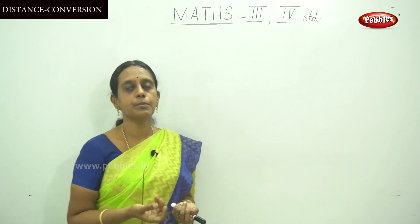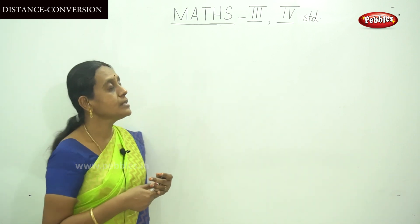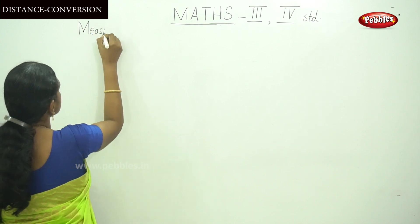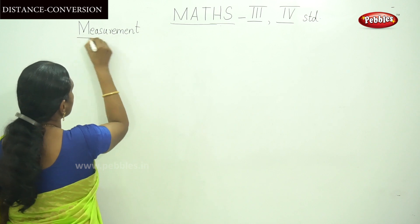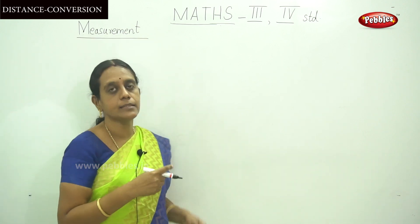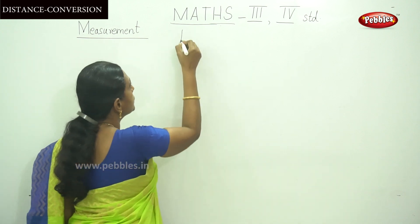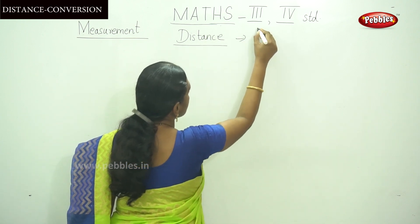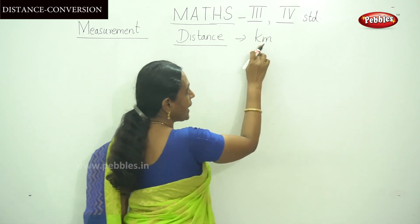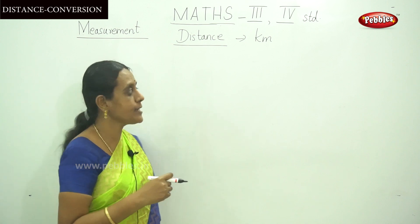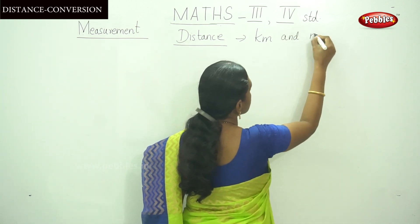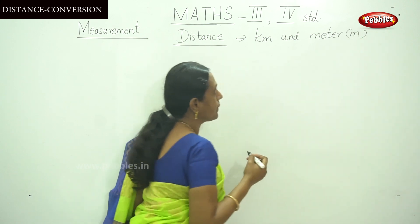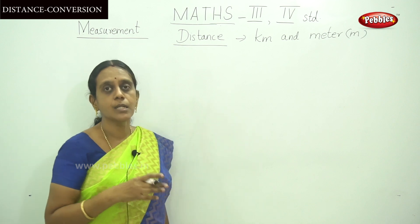We will cover conversion of kilometer into meter and conversion of meter into kilometer, and a few examples of word problems in this chapter. Our topic is measurement, and the subtopic is length — specifically distance, that is kilometer. 'km' stands for kilometer, and the smaller unit 'm' stands for meter. Kilometer is the bigger unit; meter is the smaller unit.